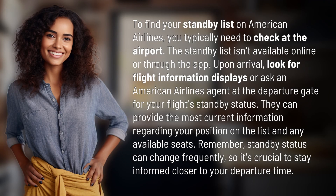To find your standby list on American Airlines, you typically need to check at the airport. The standby list isn't available online or through the app. Upon arrival, look for flight information displays or ask an American Airlines agent at the departure gate for your flight's standby status.